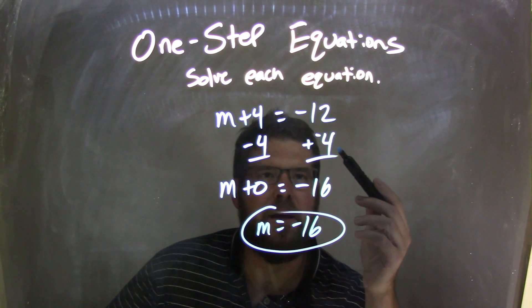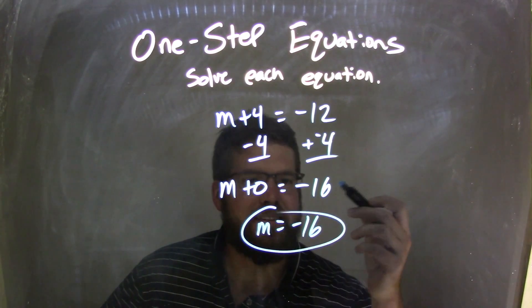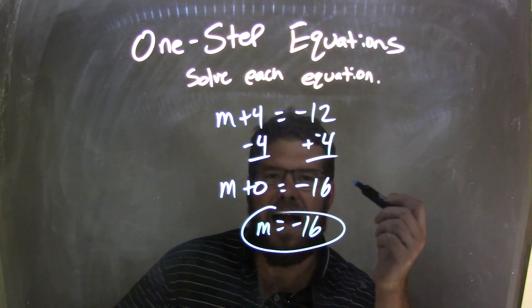Now, you don't actually have to write that step. A lot of times, you can recognize it. We start with negative 12. We subtract 4 more units. We're going to move to negative 16. But it's up to you in how you see that.